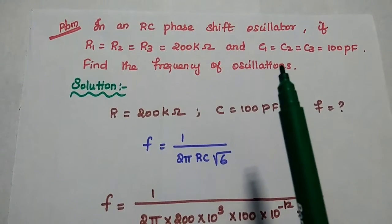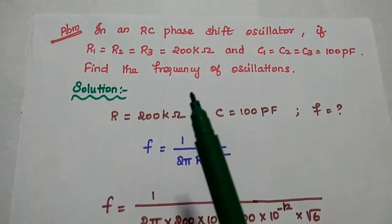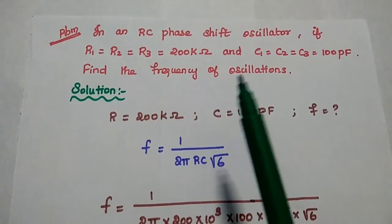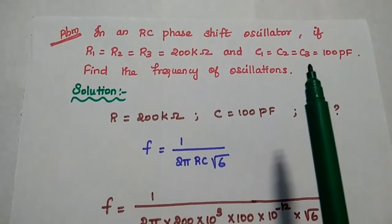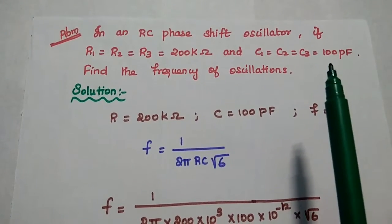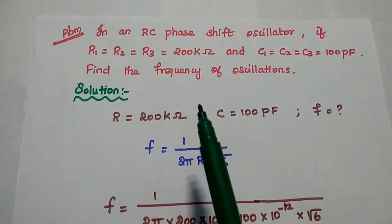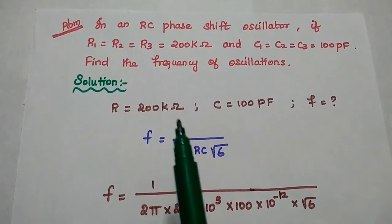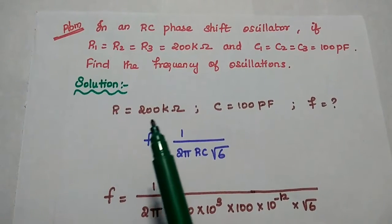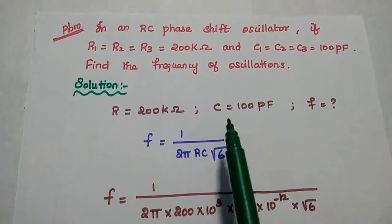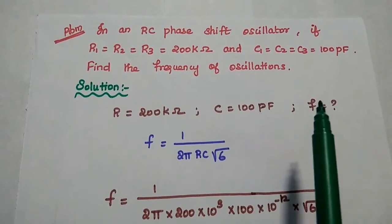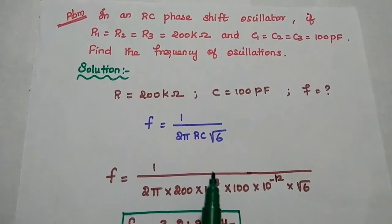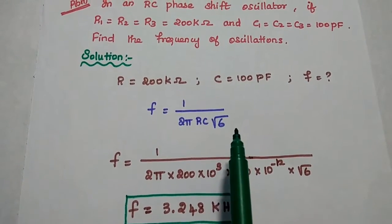Next problem: in an RC phase shift oscillator, if R1, R2, and R3 values are equal to 200 kilo ohm and C1, C2, and C3 values are same as 100 pF, find the frequency of oscillations. In the solution, the given data is R is equal to 200 kilo ohm, C is equal to 100 pF. We are going to find out the frequency using the formula F is equal to 1 by 2 pi RC square root of 6.